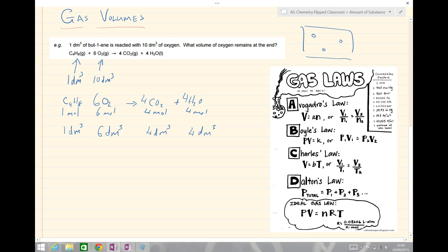If I started off with 10 decimetres cubed of oxygen and reacted with one decimetre cubed of but-1-ene, I would end up using six decimetres cubed of the oxygen and I'd be left with four decimetres cubed of oxygen. I would have made four decimetres cubed of CO2 and end up with a total of eight decimetres cubed of gas left over at the end. As long as we've got the same pressure and temperature, we can use volume straight away as we would with mole.